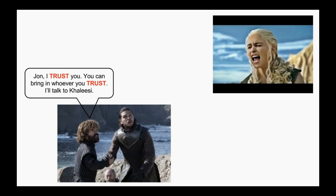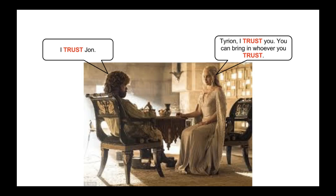Now Jon seeks Tyrion's help. Tyrion says, Jon, I trust you — you can bring in whoever you trust, I'll talk to Khaleesi. Tyrion talks to Khaleesi and says he trusts Jon. And since Khaleesi trusts Tyrion, she tells him to bring in whoever he trusts.